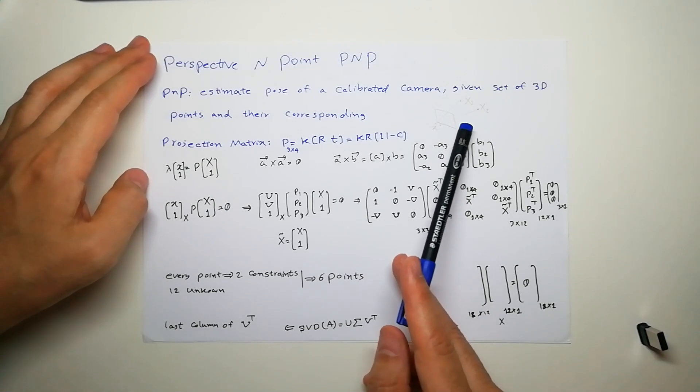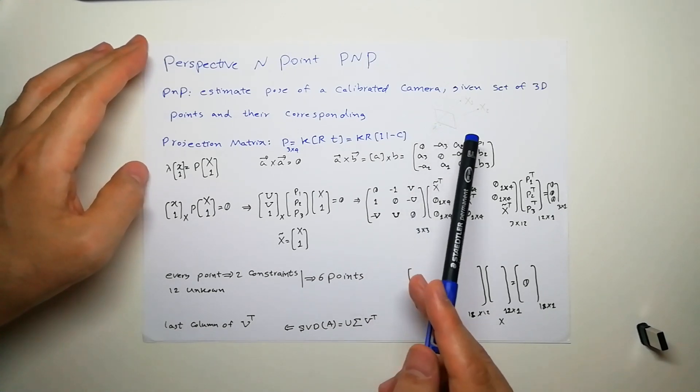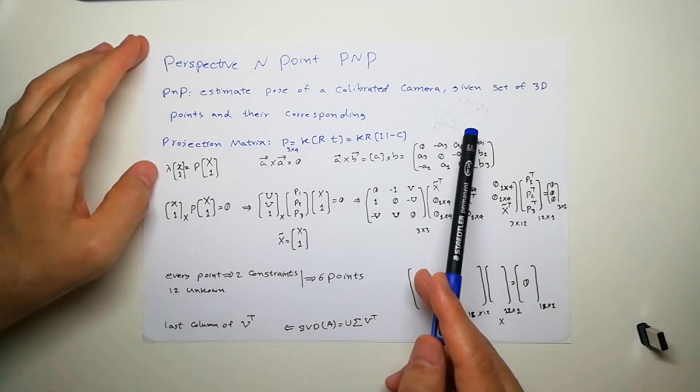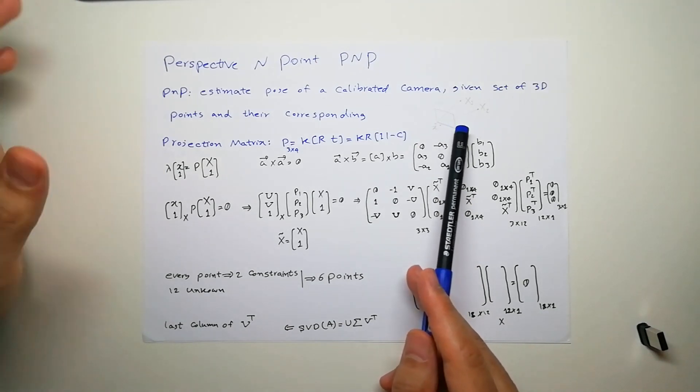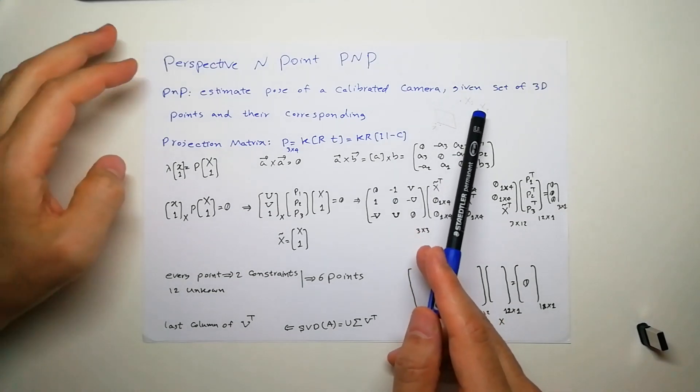You have the corresponding projection to the camera and you're looking for the position of the point. Remember, the camera is calibrated so you have K. Let's see how many points we need to uniquely identify the position of the camera.